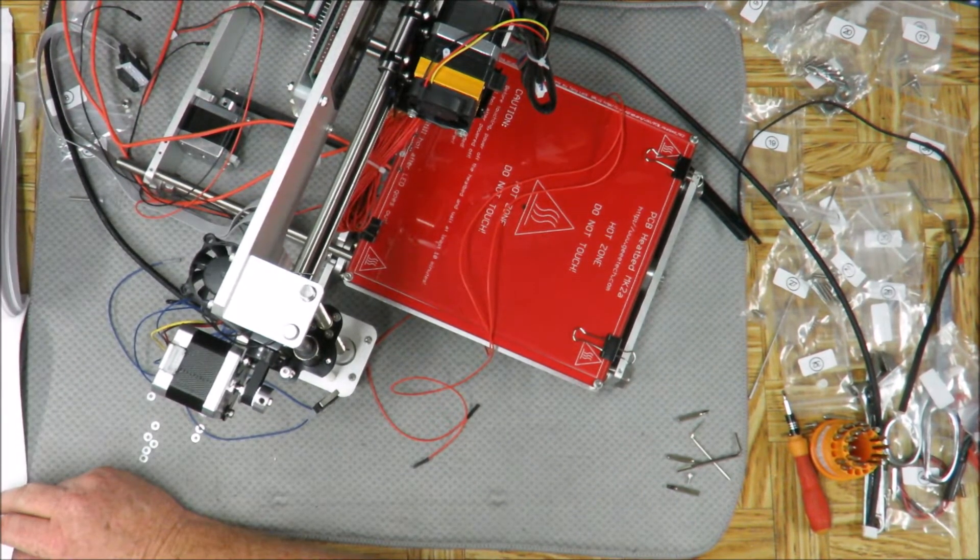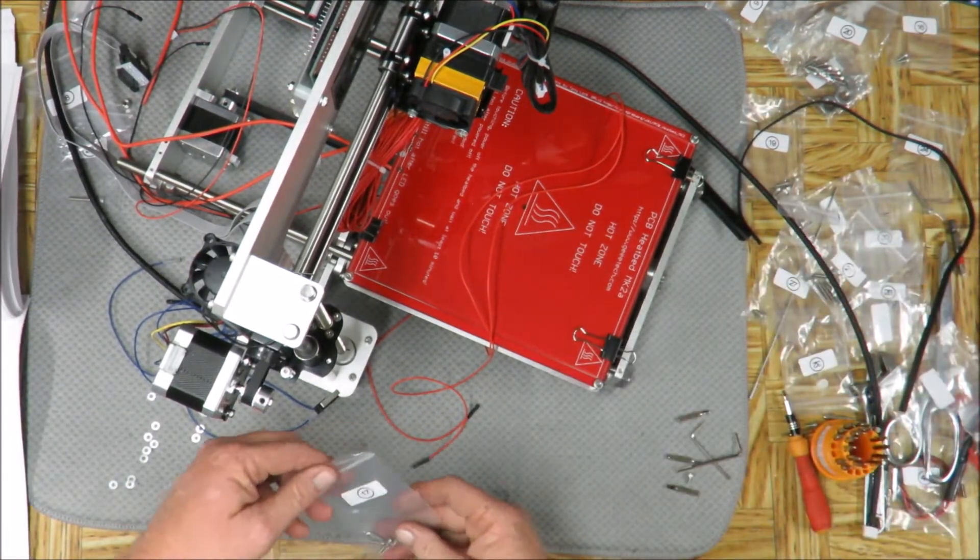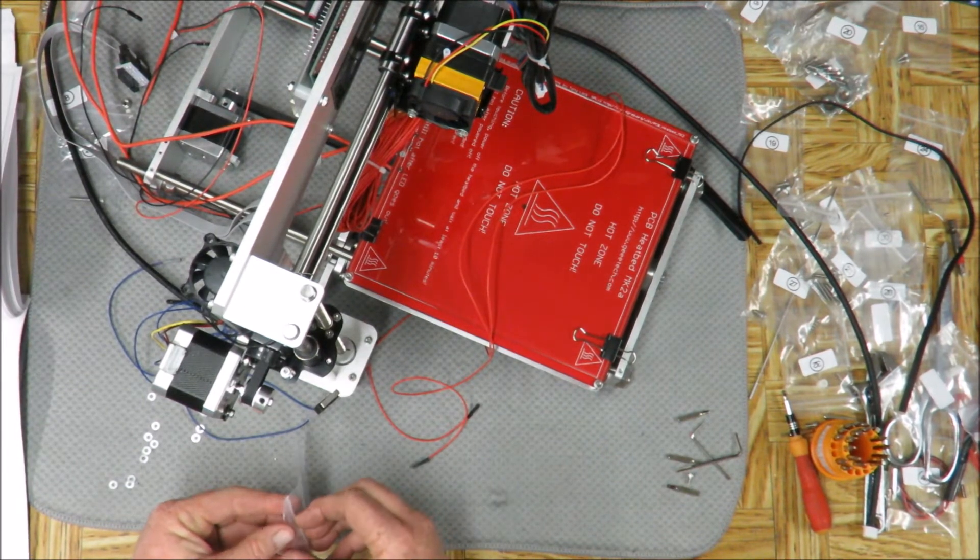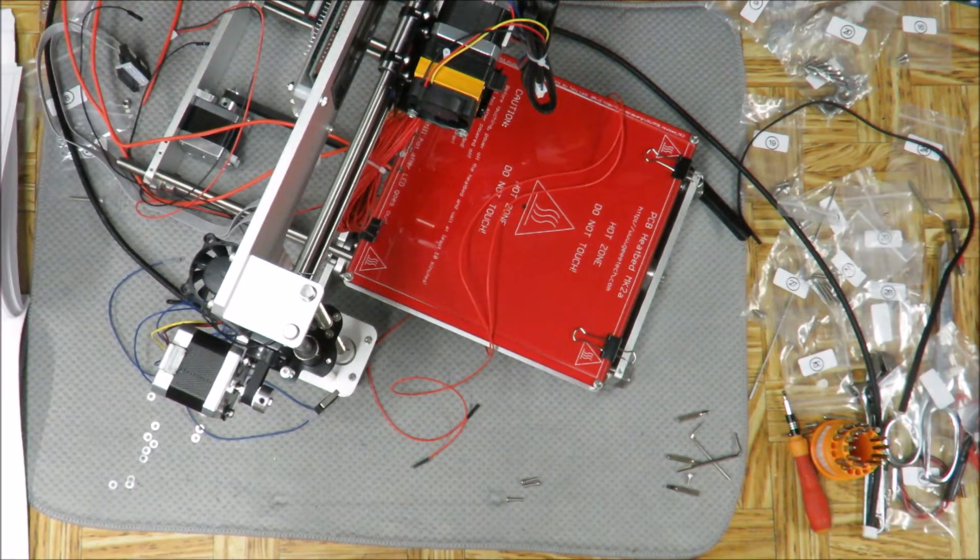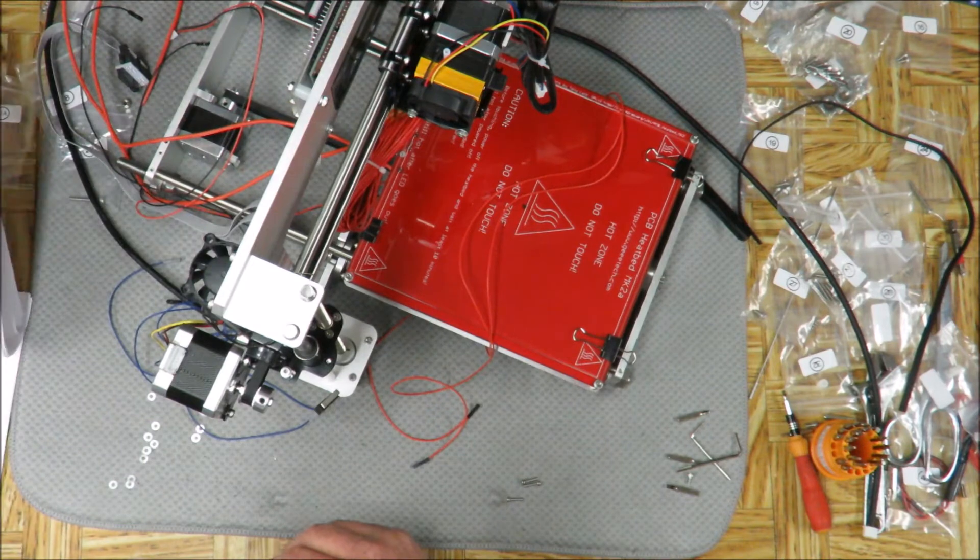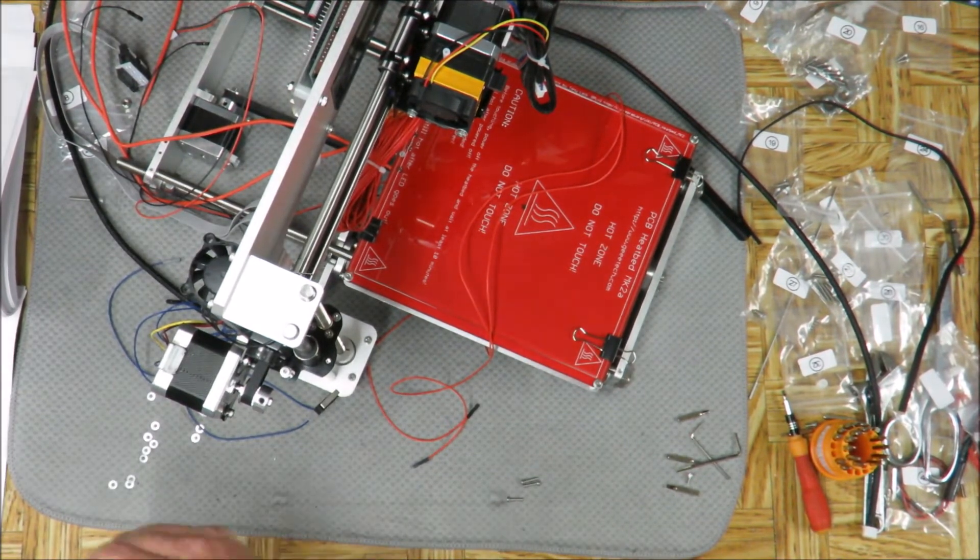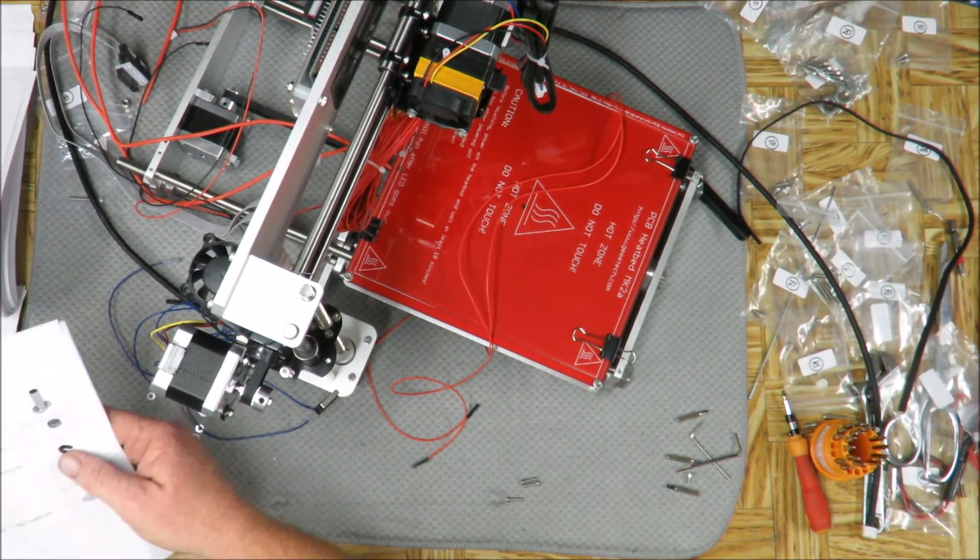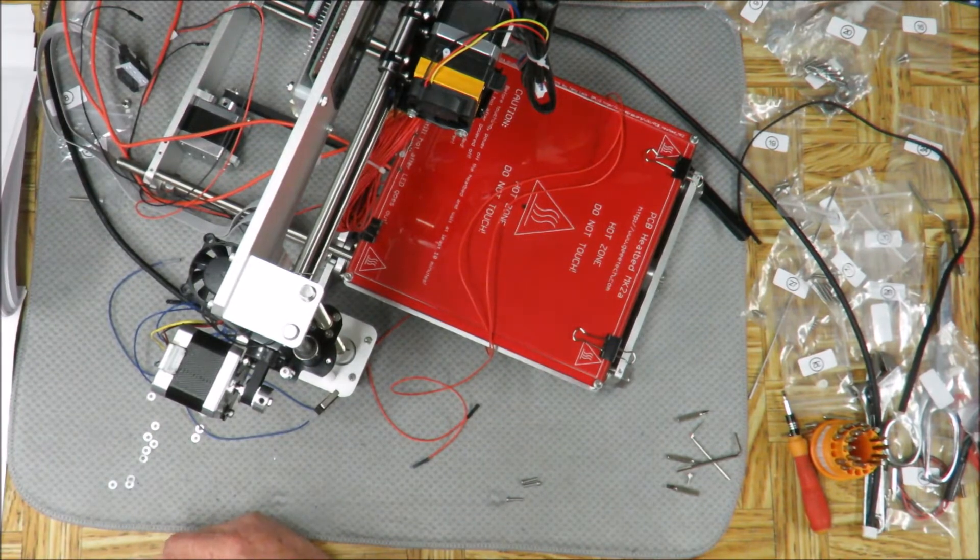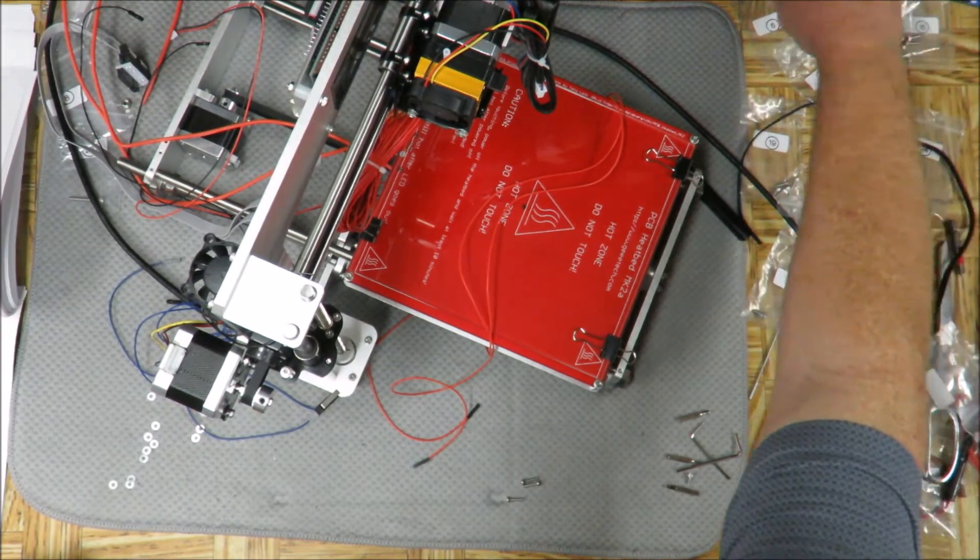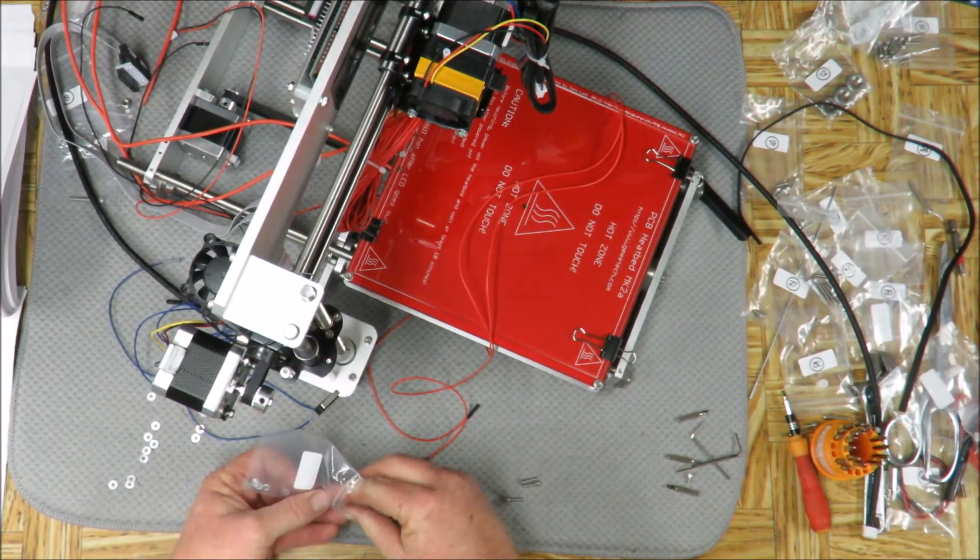So what we need is number 17 and number six washers. So I need number 17 screws and then this is two number six washers. Number six, wow I don't remember seeing number six. Let me look back at my manual here. Yep, number six, little tiny washers. There they are.